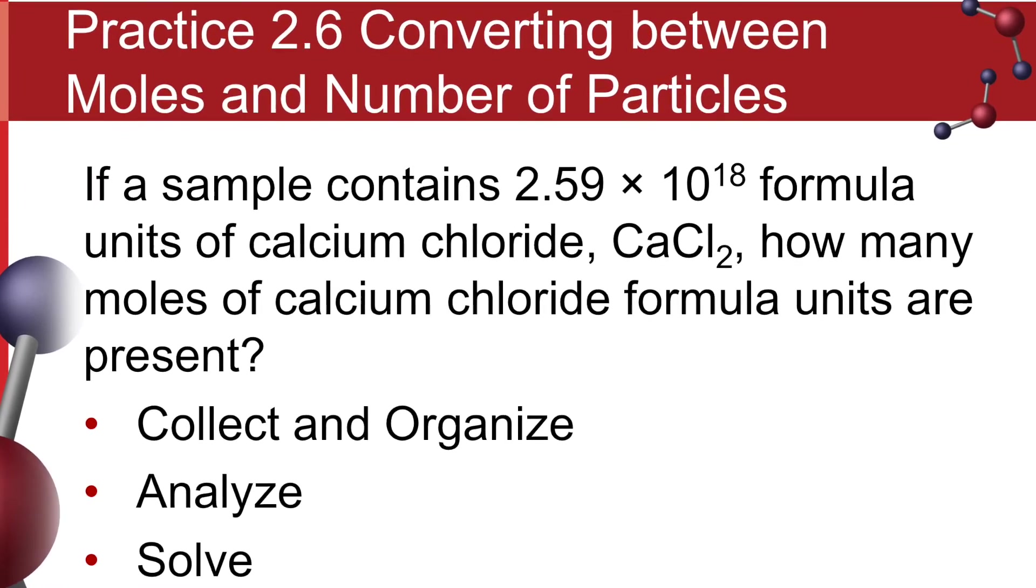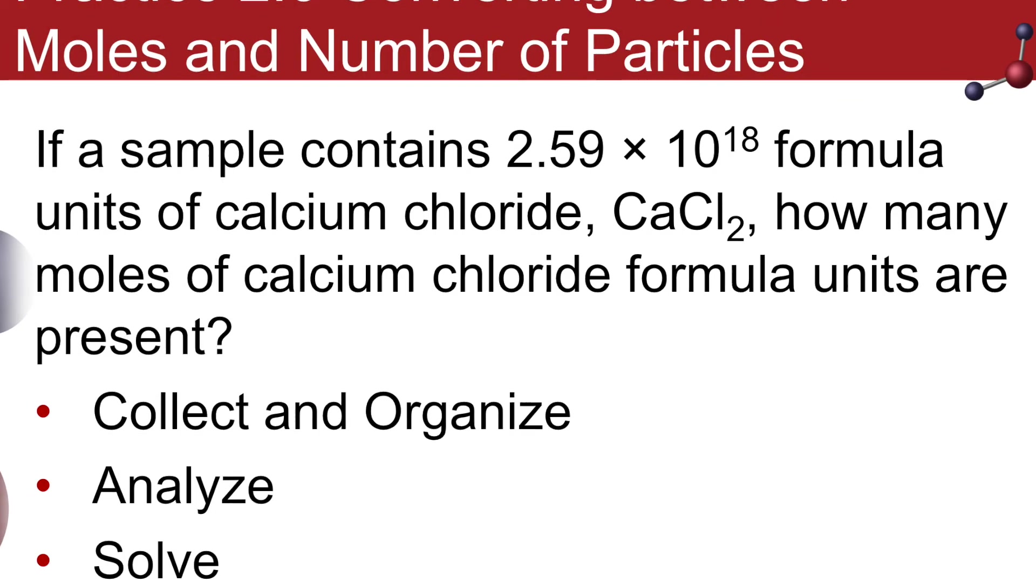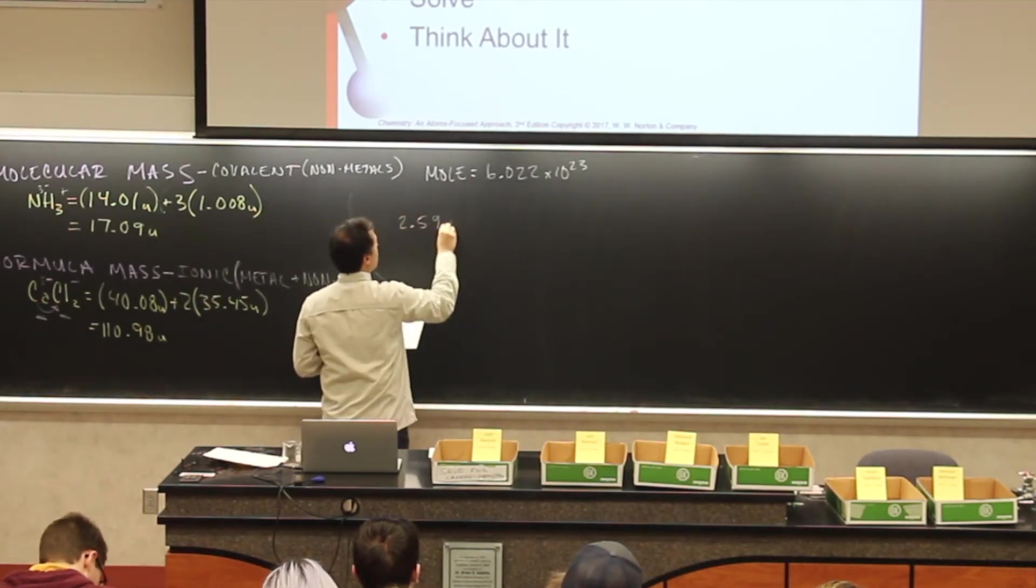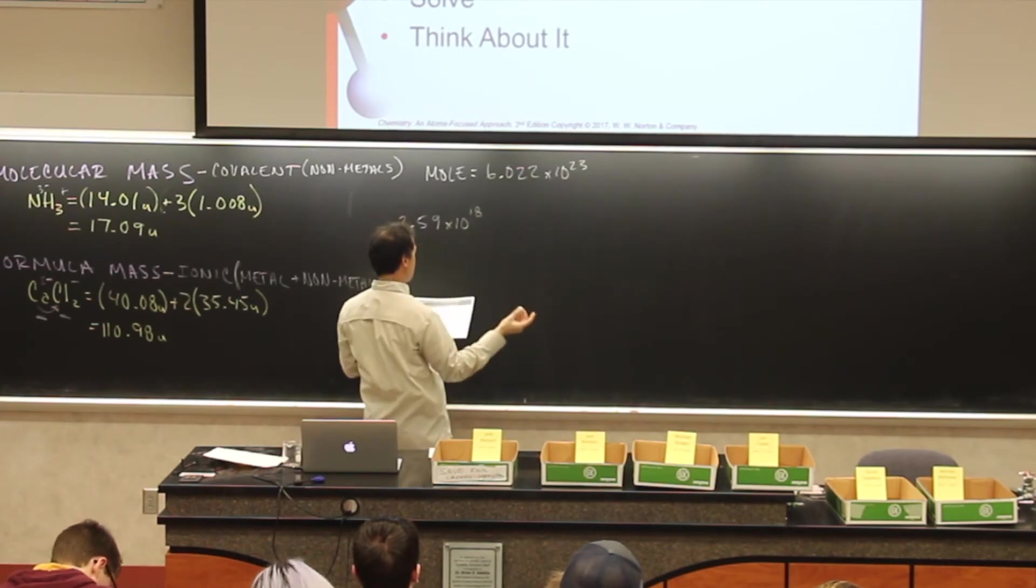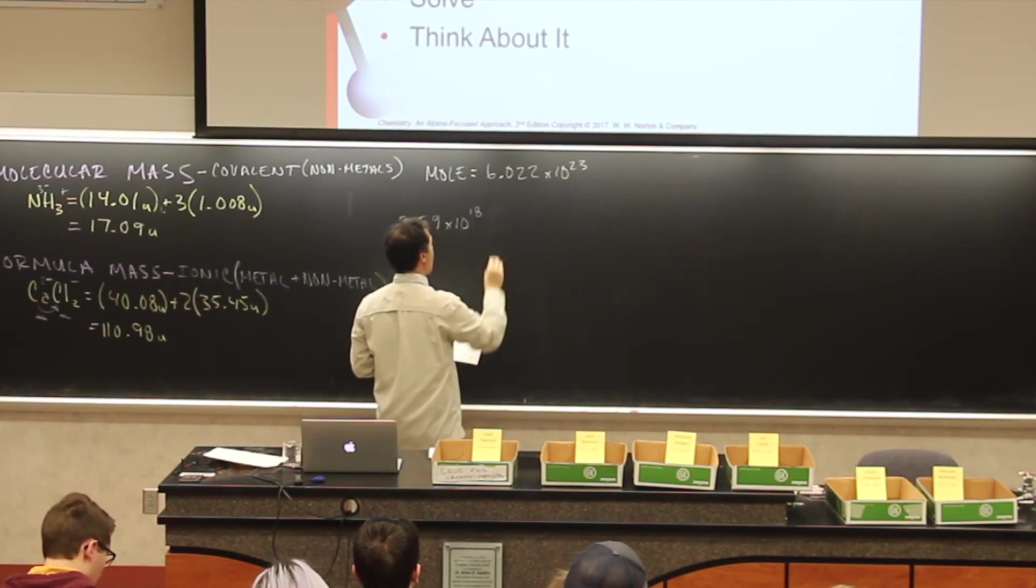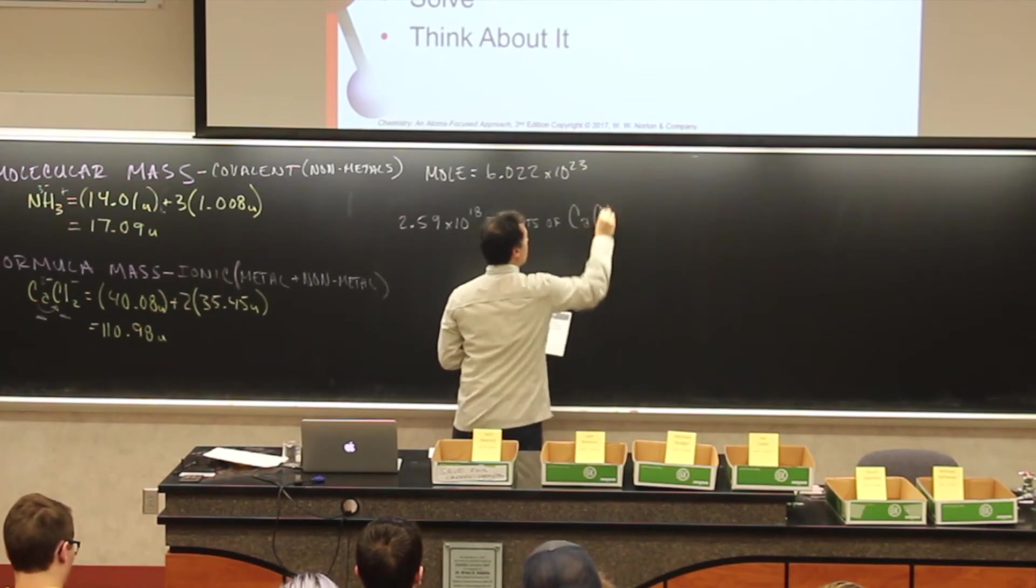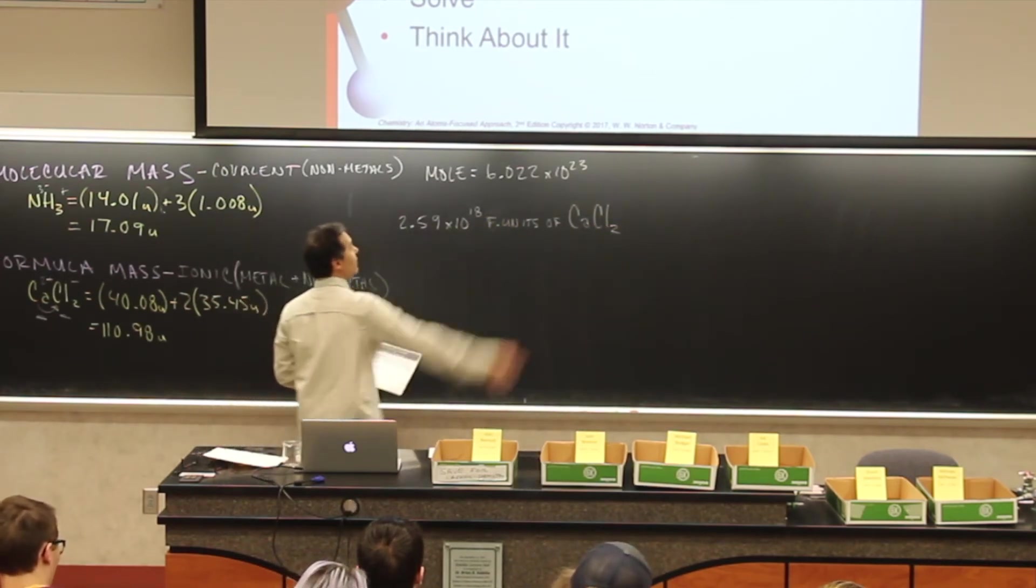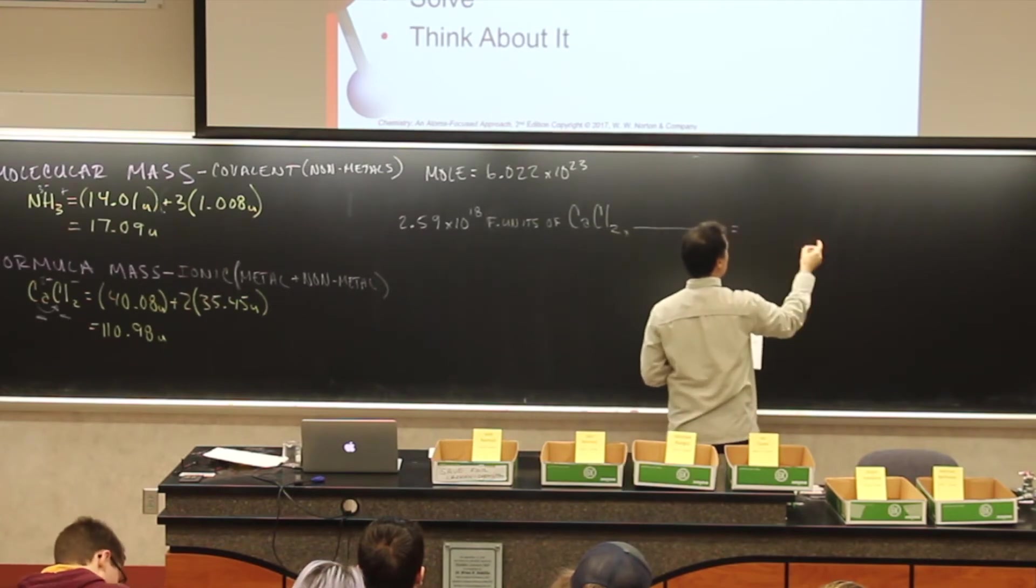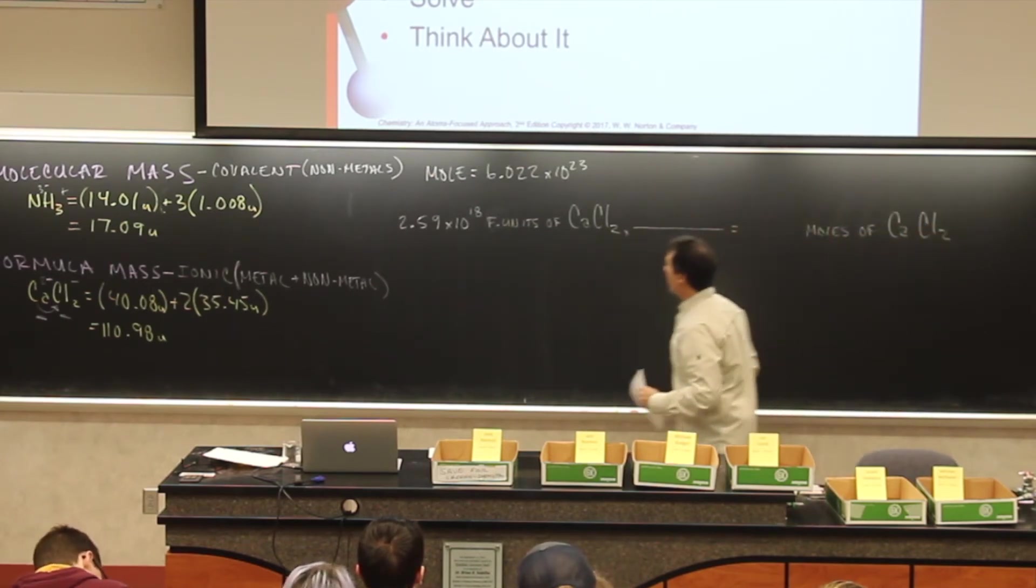So here's an example. Here we have a sample of calcium chloride. We've got 2.59 times 10 to the 18th formula units. How many moles of calcium chloride do I have? So that looks like math. 2.59 times 10 to the 18th formula units of calcium chloride, and I want to convert that into moles, some number of moles of calcium chloride.